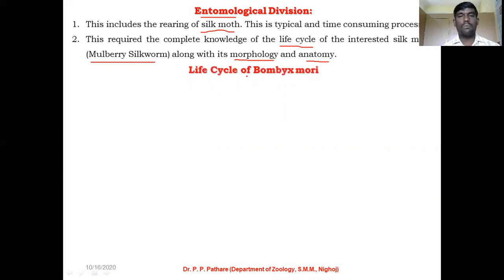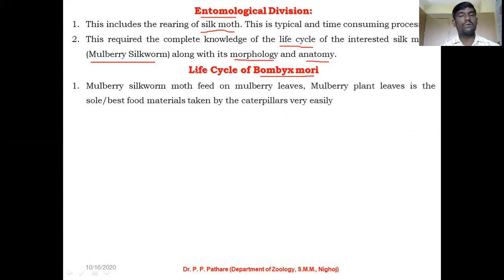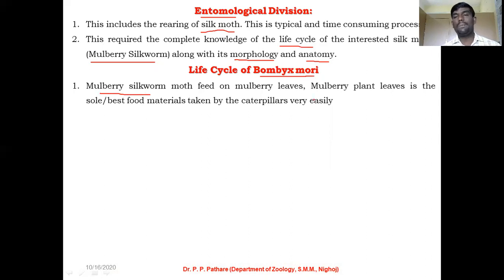Bombyx mori is the biological name of the mulberry silkworm. The mulberry silkworm moth feeds on mulberry leaves — that is why it is called the mulberry silkworm. This moth particularly feeds on mulberry plants, and mulberry plant leaves are the sole and best food material for the caterpillar of Bombyx mori.